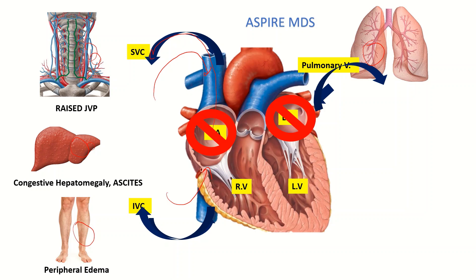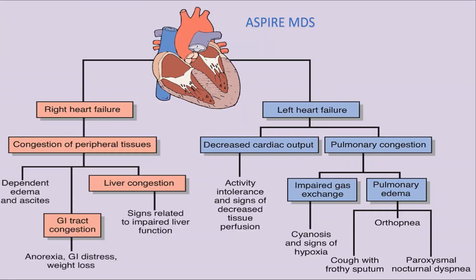In left-sided heart failure, congestion in the lungs is called pulmonary edema. For right-sided heart failure, the clinical features from peripheral tissue include ascites and dependent edema in the lower limbs. If it causes congestion in the GI tract, it leads to anorexia, GI distress, and weight loss. Congestion in the liver leads to impaired liver function. These are all features of right-sided heart failure.